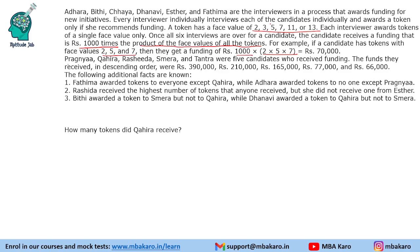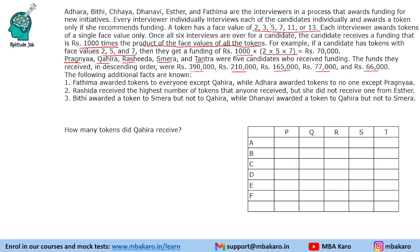There are 5 candidates — P, Q, R, S, T — and they received fundings of 390,000, 210,000, 165,000, 77,000 and 66,000 in no particular order. We need to find who is giving tokens to whom, so we will make a table and fill in the token values received from different interviewers.